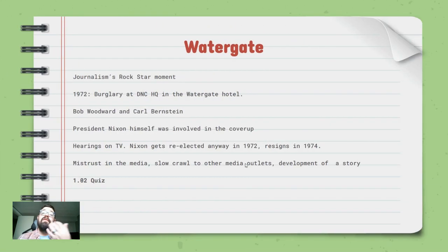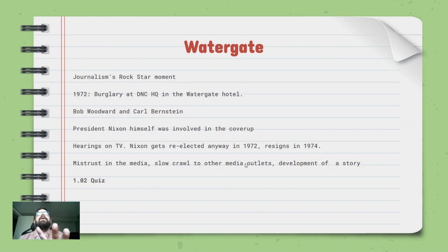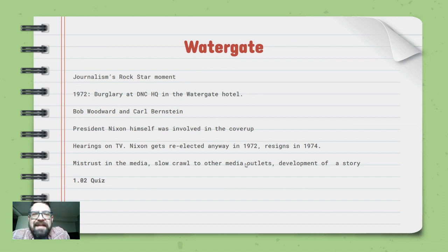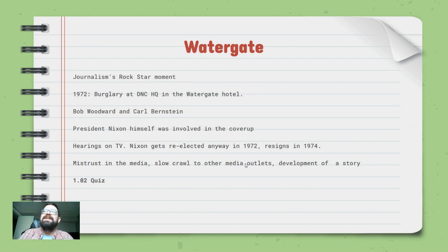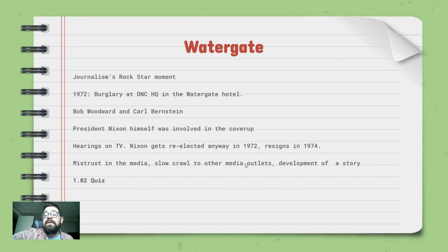Watergate is journalism's big rock star moment. In 1972 there's a burglary at the Watergate Hotel — a complex with hotel rooms, apartments, and office buildings all in one. The burglary targeted the Democratic National Committee headquarters. A group of Richard Nixon supporters planned to break in and find evidence that the DNC was funding Fidel Castro. I just read a book on Watergate, so I know a lot about this.